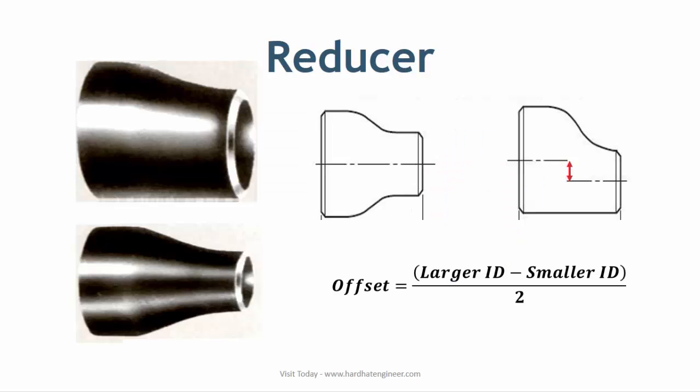Reducers are used to change the size of the pipe. There are two types of reducers used in piping: concentric and eccentric. In concentric reducers, the center of both ends are on the same axis, which maintains the centerline elevation of the pipe.